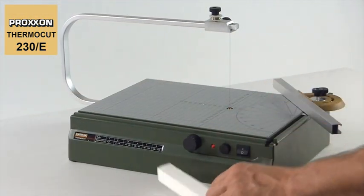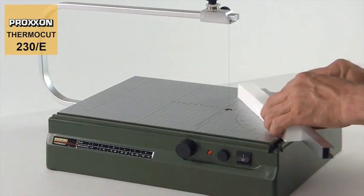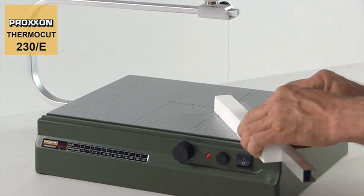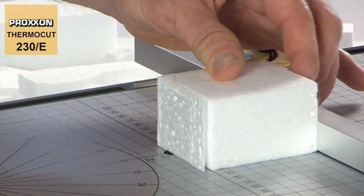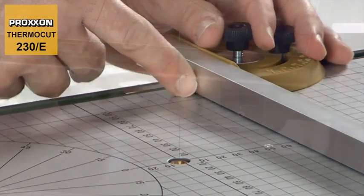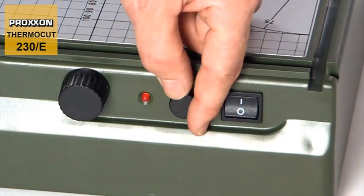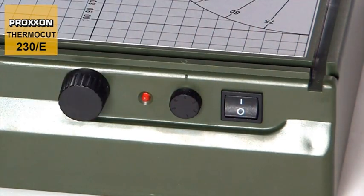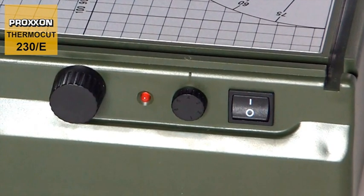And don't worry, the integrated isolation transformer and Class 2 protective insulation ensure that the Thermocut 230E is absolutely safe, and the hot wire cuts with a completely safe voltage of 10V. In addition to this, an LED operating indicator indicates that the wire is hot and ready for use. Burnt fingers can therefore be reliably avoided.